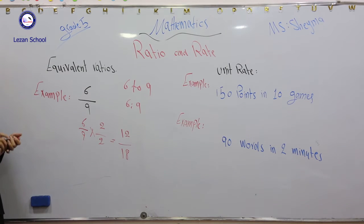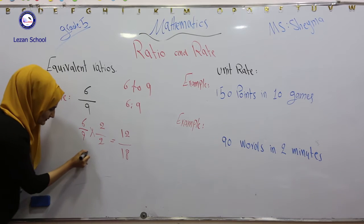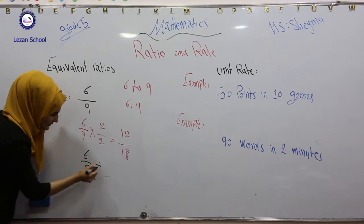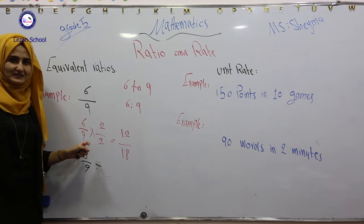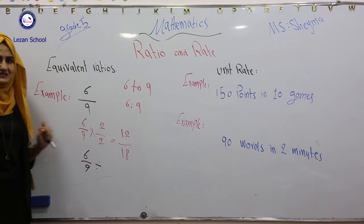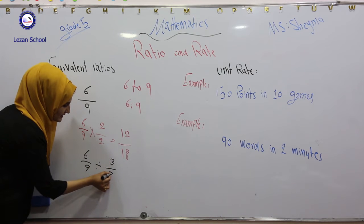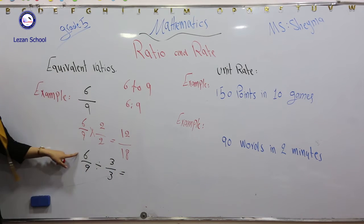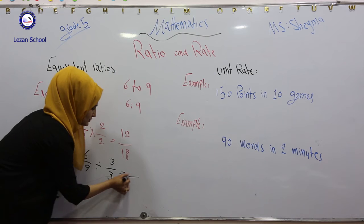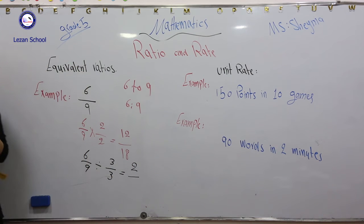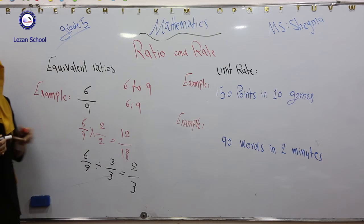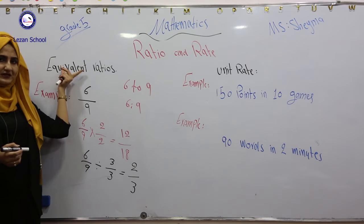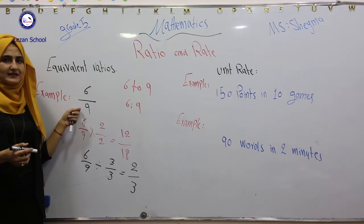We can find equivalent ratio by division. 6 over 9 divide by - but divide by which number? Divide by the number that can evenly divide both 6 and 9. In here, we divide by 3 over 3. 6 divided by 3 equals 2. 9 divided by 3 equals 3. So again, 2 over 3 is an equivalent ratio for 6 over 9.